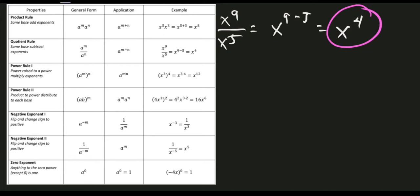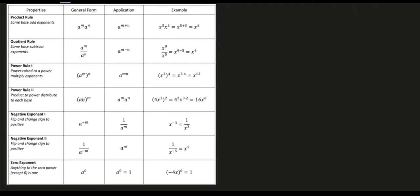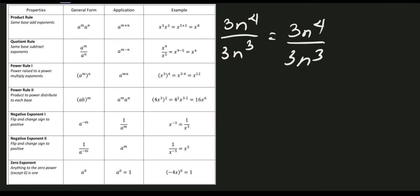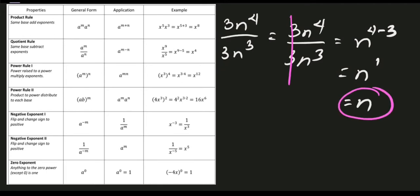Let's try problem number 2: 3n raised to 4 all over 3n cubed. We divide numerical coefficients — 3 divided by 3 cancels to 1 — leaving n raised to 4 divided by n raised to 3. Since they share the same base, subtract exponents: 4 minus 3 equals 1, so the answer is simply n.